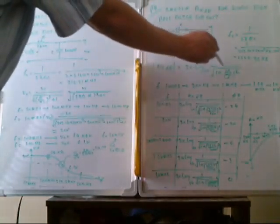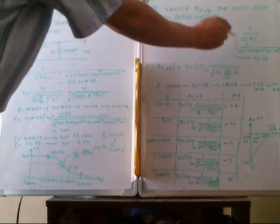For the gain in dB, we use this formula. Then we substitute. FC is the cutoff frequency, which is 1 divided by 2πRC.